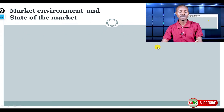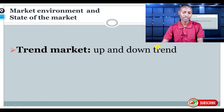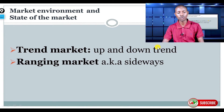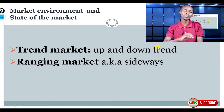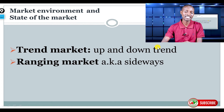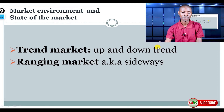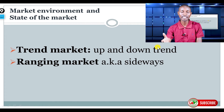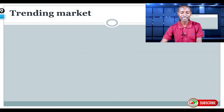There are two market environments. Any particular market will be found in one of these two market environments. The first behavior of the market is either a trending market or a ranging market. If the market is trending, it can trend either up or down. And if it is not trending up or down, it is ranging — and the ranging market we also call sideways.